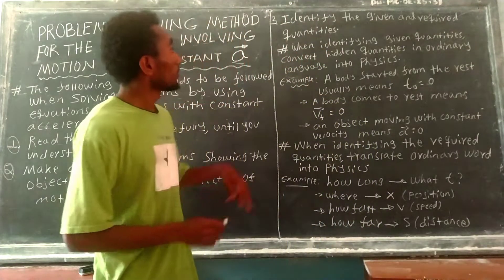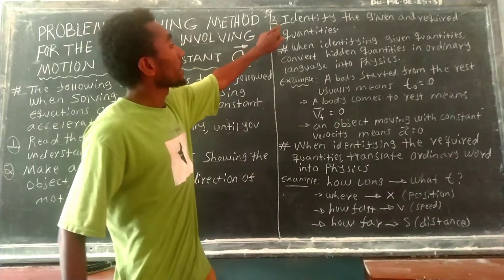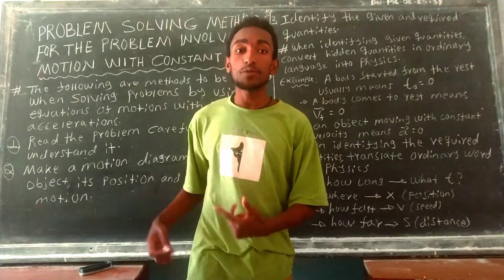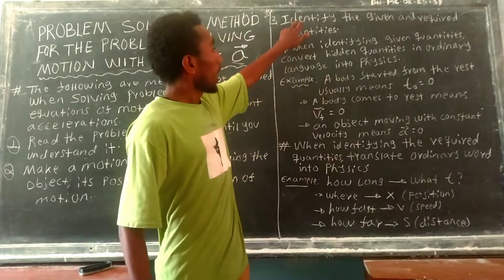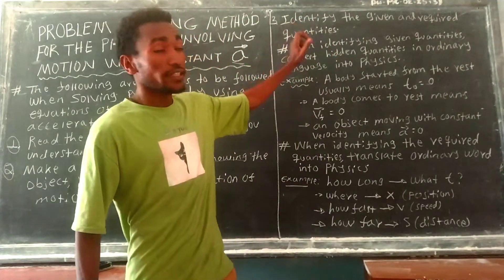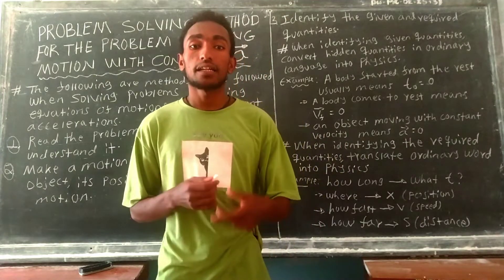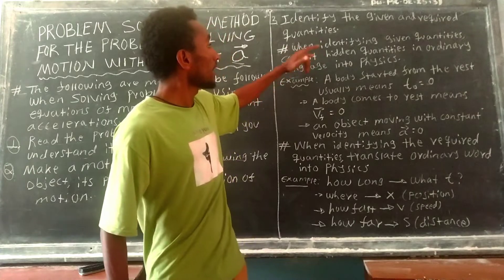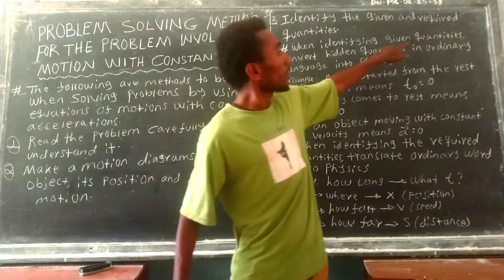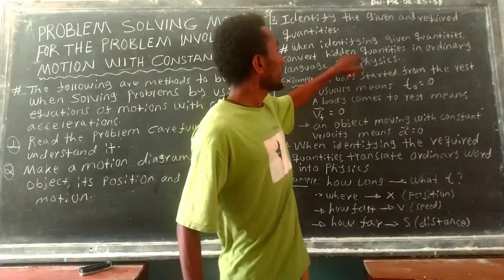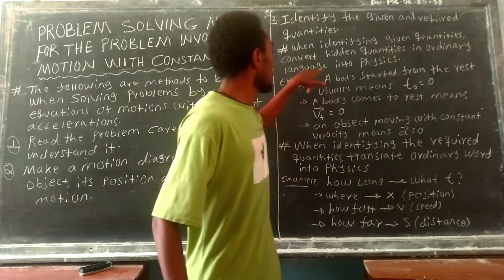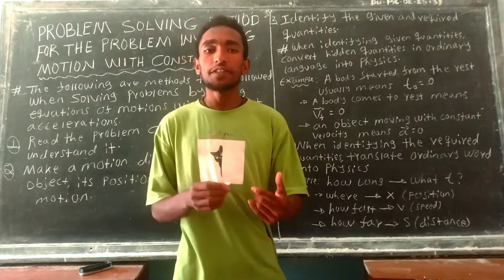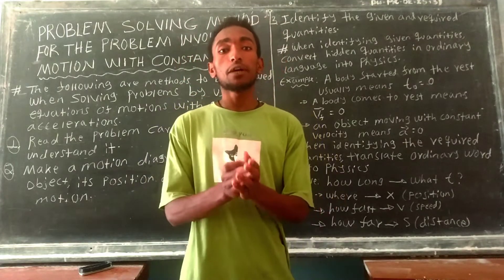Thirdly, the motion is described by physical quantities. We can identify the given quantities and convert hidden quantities in ordinary language into physics — translating everyday words into physical quantities.